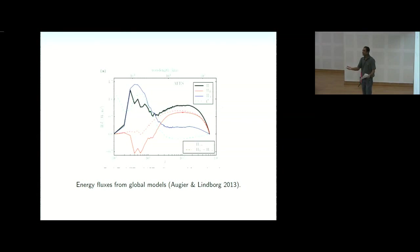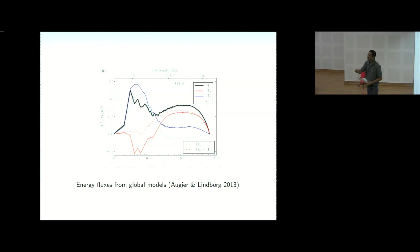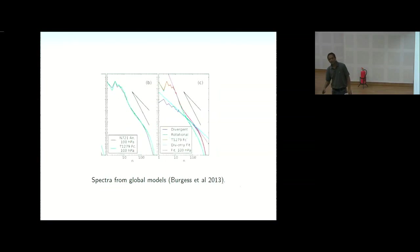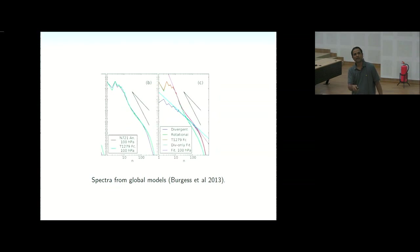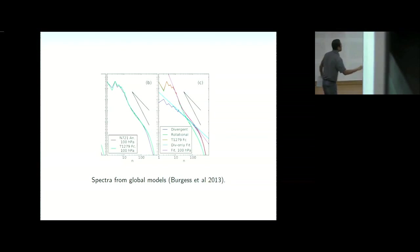The rotational modes are precisely the QG modes — they have no divergence. The divergent modes are the inertia-gravity waves filtered out by QG. If you plot the power spectra of the rotational and divergent parts separately, the rotational part gives the steep k^{-3} spectrum while the divergent part gives a shallower spectrum; they intersect at some intermediate scale.